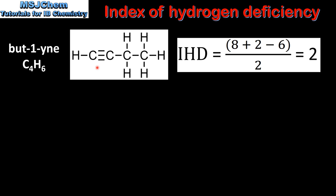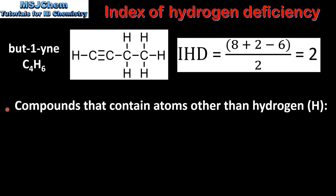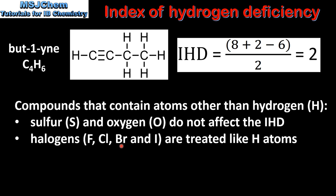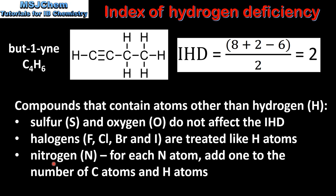Next we look at compounds that contain atoms other than hydrogen. If sulfur and oxygen atoms are present in a molecule they do not affect the index of hydrogen deficiency. Halogens such as fluorine, chlorine, bromine and iodine are treated like hydrogen atoms. If nitrogen is present in the molecule, for each nitrogen atom add 1 to the number of carbon atoms and hydrogen atoms.